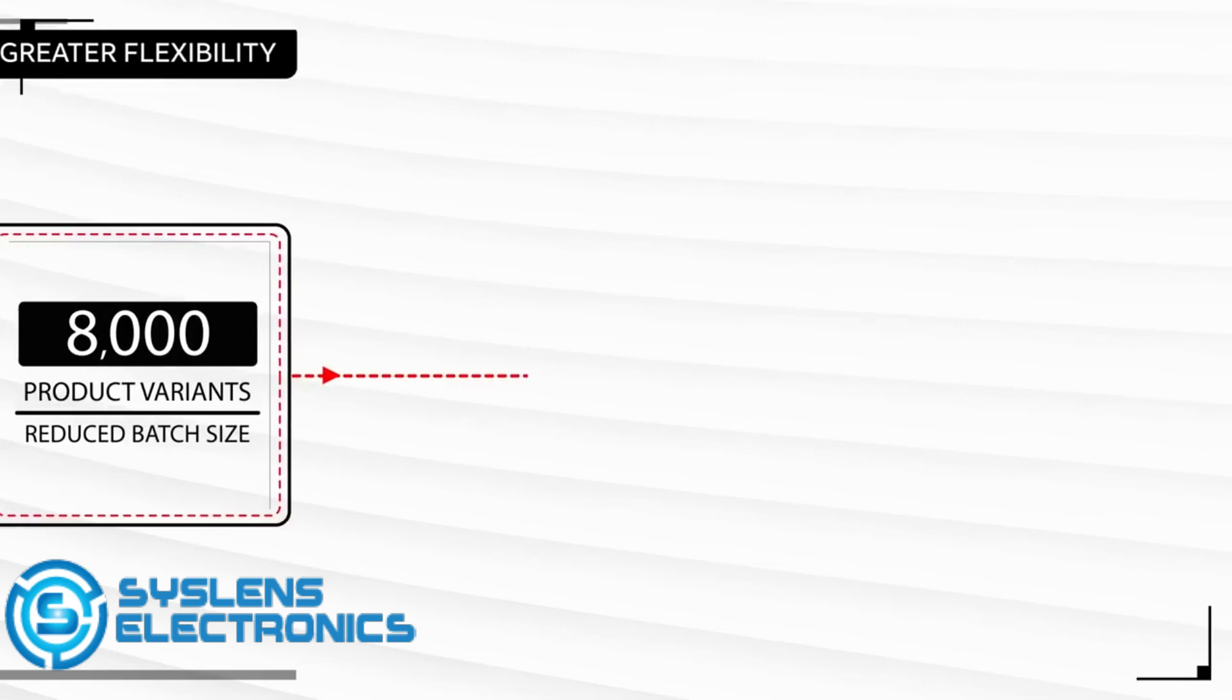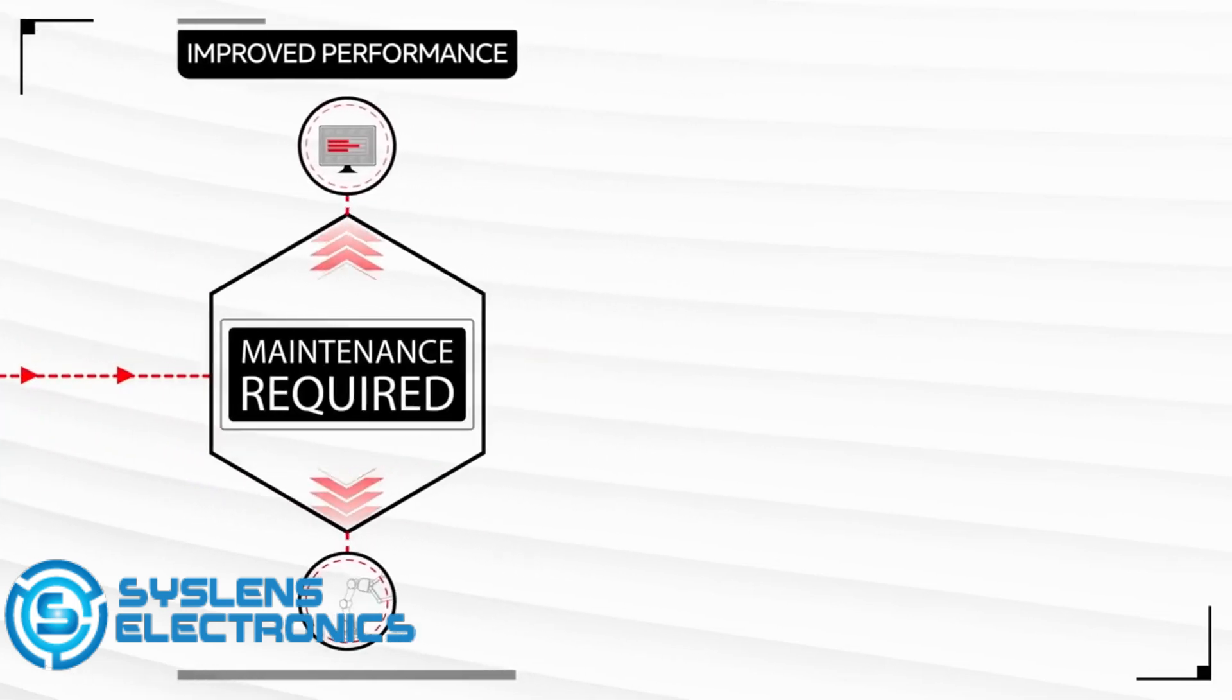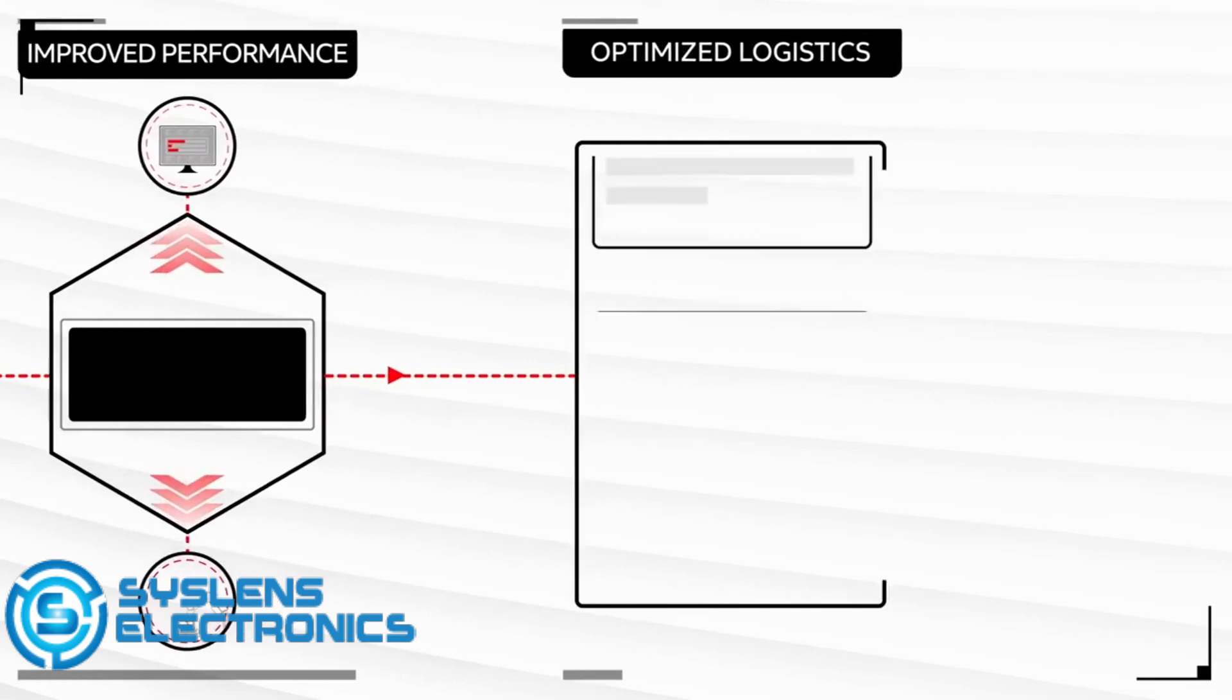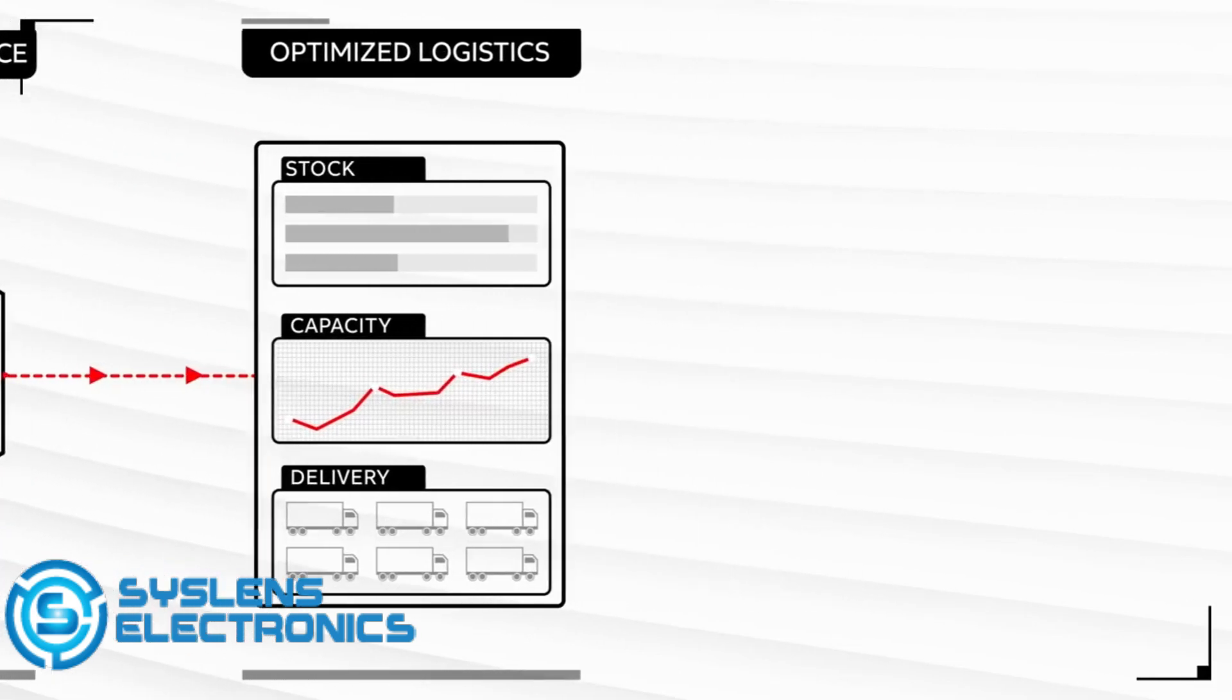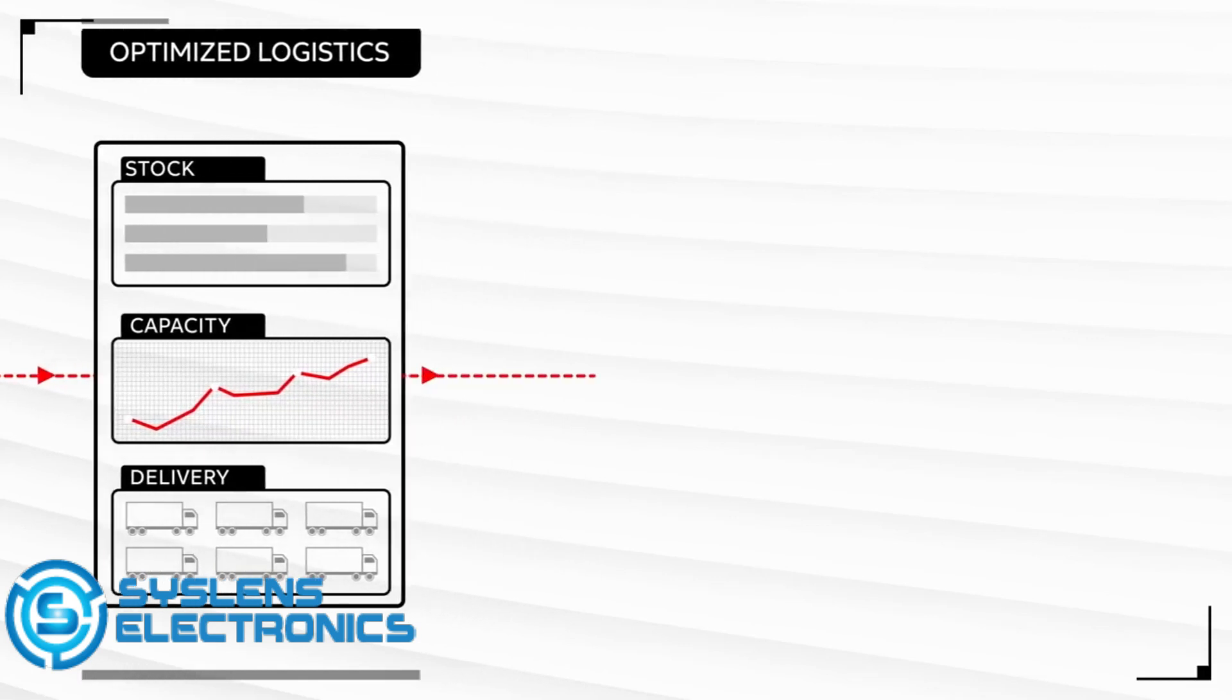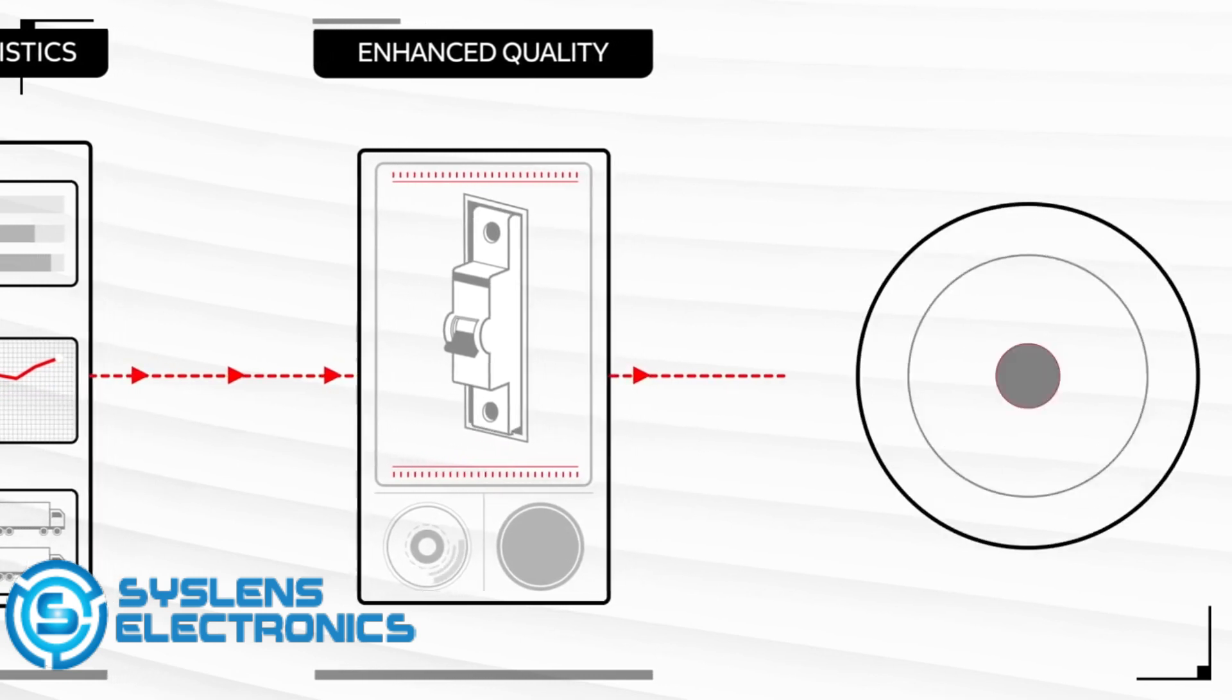It's improved our performance as machine sensors provide predictive maintenance information. And it's improved our overview of stock and capacity, which in turn leads to more accurate delivery times and better materials handling, maintaining the high quality of these circuit breakers and ultimately delighting customers.